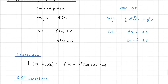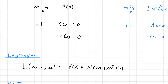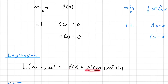The first step is to define our Lagrangian. We're going to have two new variables: lambda and mu. Lambda is associated with our equality constraint function and mu is associated with our inequality constraint function. The Lagrangian has our objective function, then lambda-transpose times the equality constraint function, and mu-transpose times the inequality constraint function.